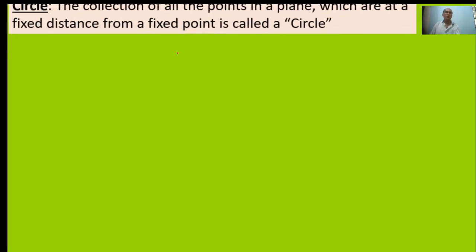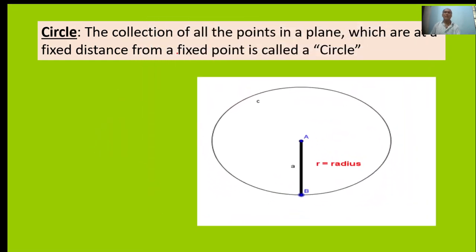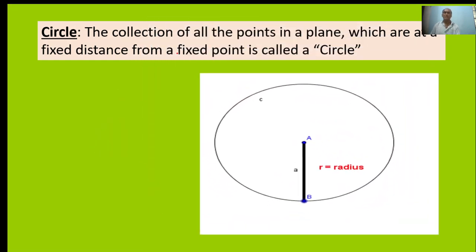Now, what is defined by circle? The collection of all points in a plane which are at a fixed distance from a fixed point is called a circle. Here, A is the center point, B is a point on the circle. This is called the radius, denoted by r. The fixed distance is the radius, denoted by r.